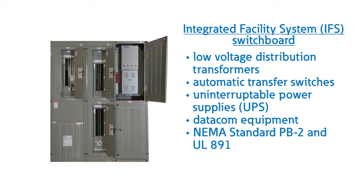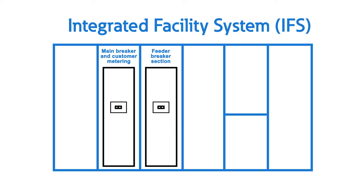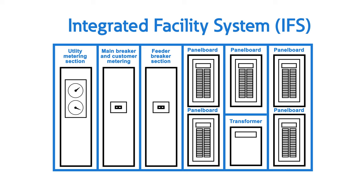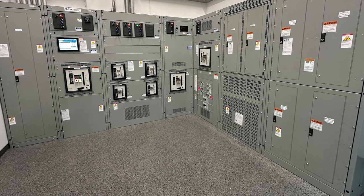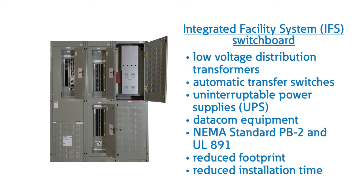NEMA's standard PB2 and UL891 Integrated Facility System switchboards combine circuit breakers, chassis, and transformers, as well as other Eaton electrical products. IFS switchboards integrate electrical distribution components that are traditionally separate and control equipment into a single, space-saving, factory-assembled and connected product. By integrating the various equipment on the factory floor, IFS systems reduce footprint and installation time at the customer site.